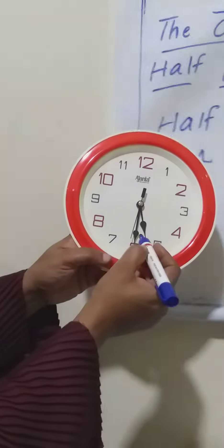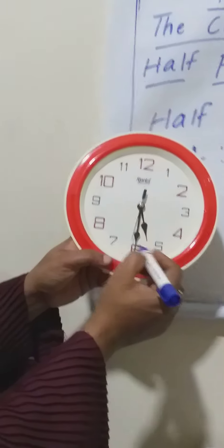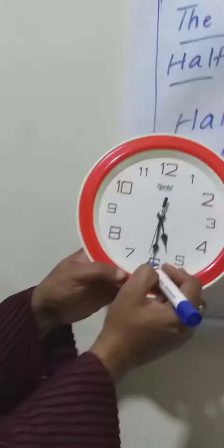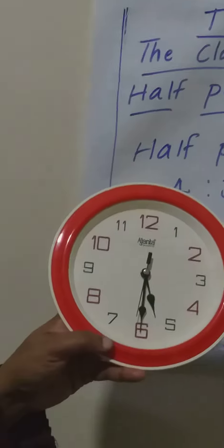This time, our hour hand is standing between 6 and 5. And the minute hand is standing at 6, which is 30 minutes. You see.